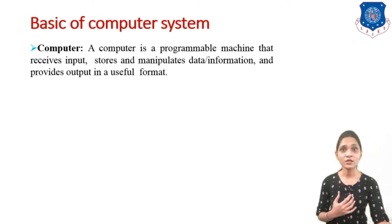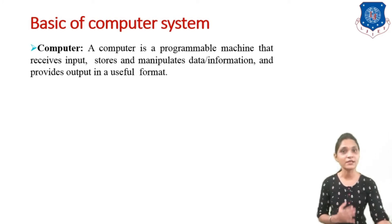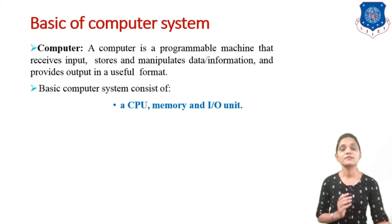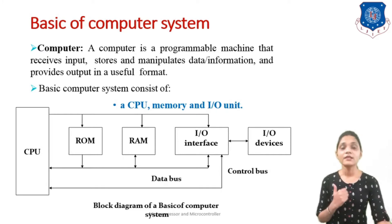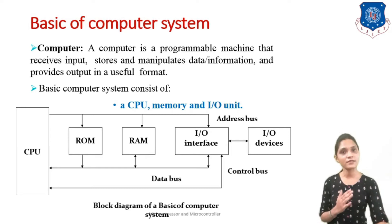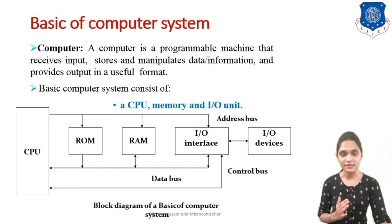A computer is a programmable machine that receives input, stores and manipulates data or information, and provides the output in a useful format. A basic computer system consists of a CPU, memory, and an I/O unit. This block diagram for the basic computer system consists of a CPU, memory (RAM and ROM), and some I/O devices connected via I/O interfaces. All connections are done using buses like address bus, control bus, and data bus.